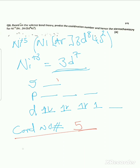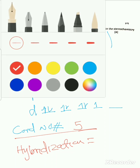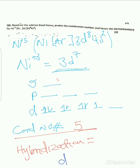For hybridization, you use the empty orbitals on s, p, and d. On d there is one empty orbital, on s there is one, and on p there are three. So the hybridization is dsp³, which can also be written as sp³d — it's the same thing. That's how you arrive at the hybridization.